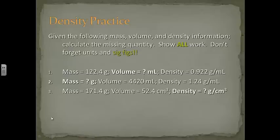Density practice. Given the following mass, volume, and density information, calculate the missing quantity. Show all of your work. Don't forget units and significant figures. Number one, mass equals 122.4 grams. Volume is unknown, and density equals 0.922 grams per milliliter.